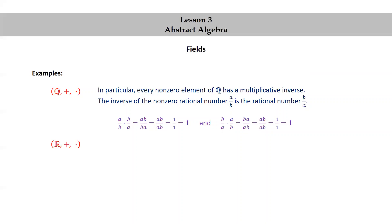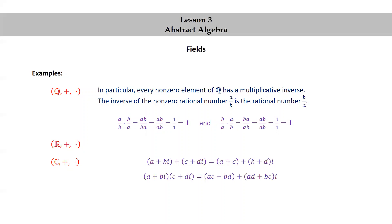The set of real numbers together with addition and multiplication is another example of a field, as well as the set of complex numbers together with addition and multiplication. Here, addition is defined by (A + Bi) + (C + Di) = (A + C) + (B + D)i. And for multiplication, (A + Bi) × (C + Di) = (AC − BD) + (AD + BC)i.